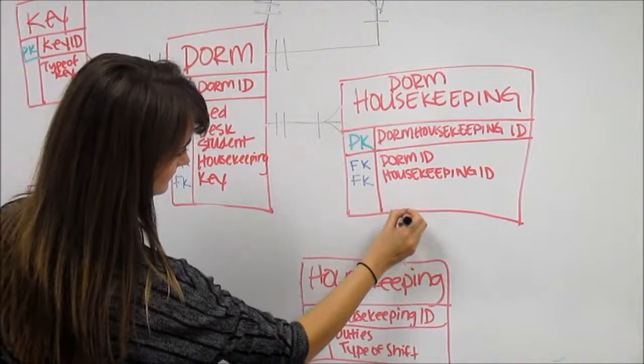To connect these tables, a dorm can have more than one housekeeper, and the housekeeping can belong to more than one. We hope you now have a better understanding of ER diagrams.